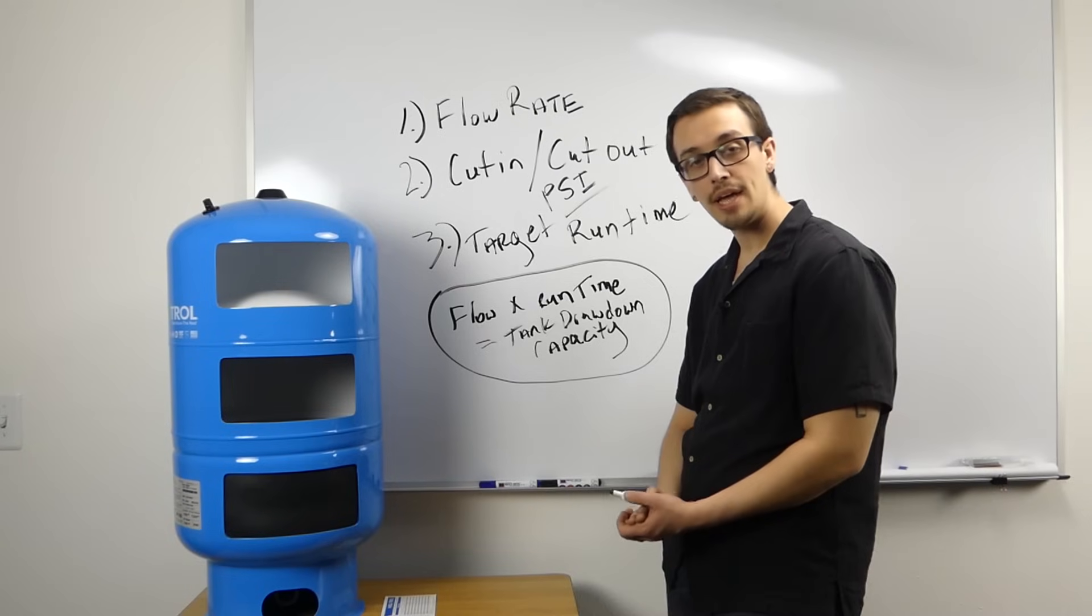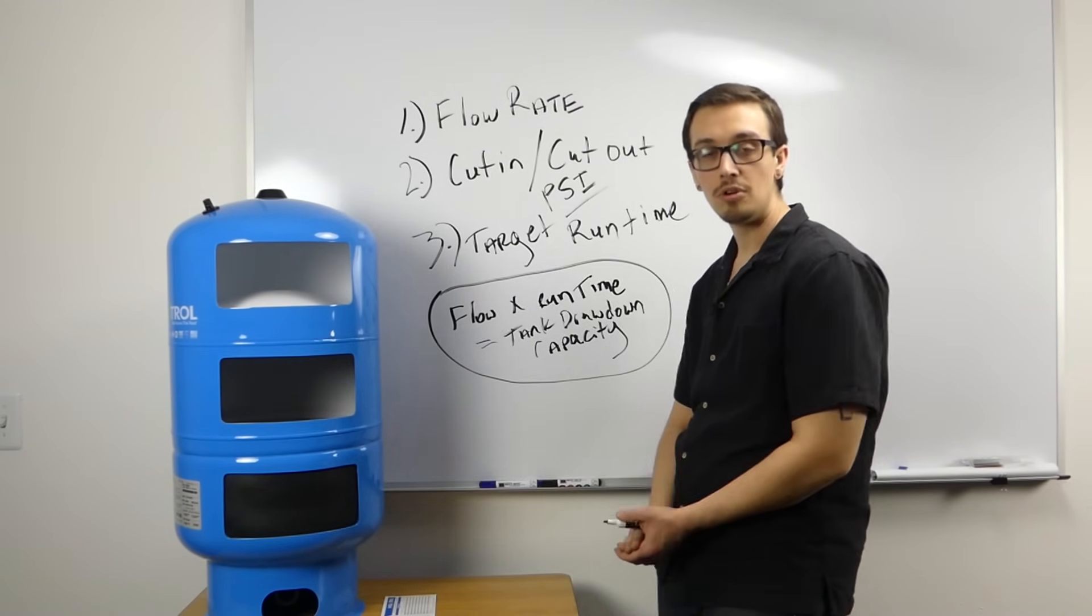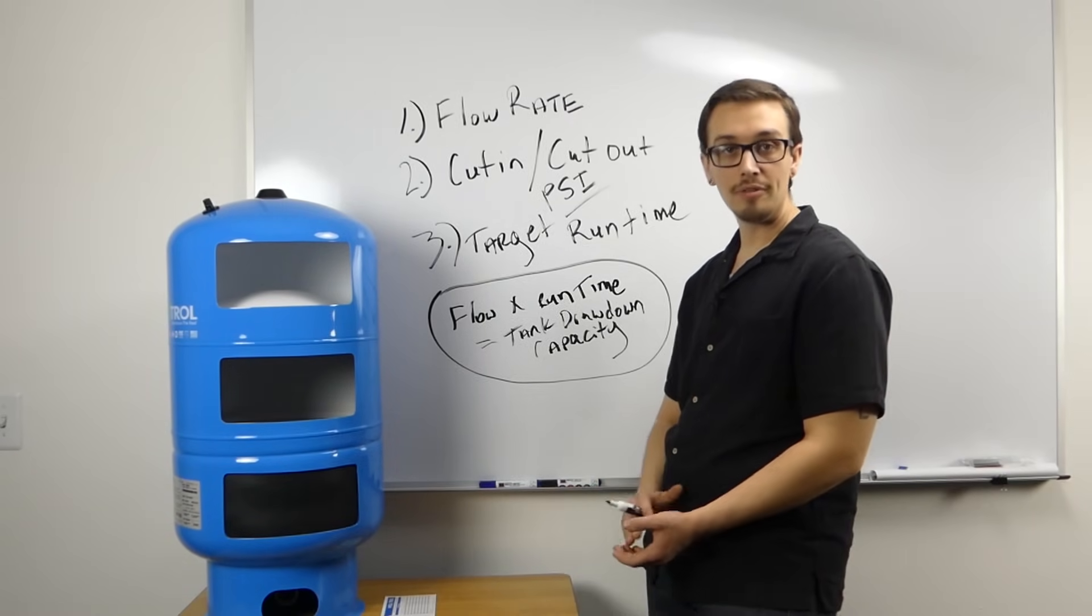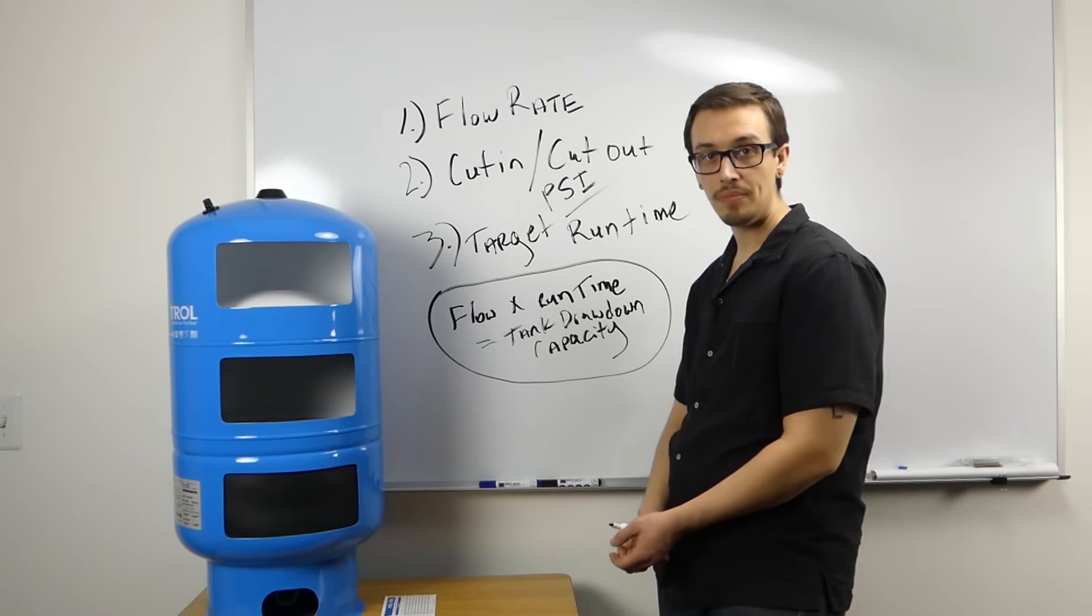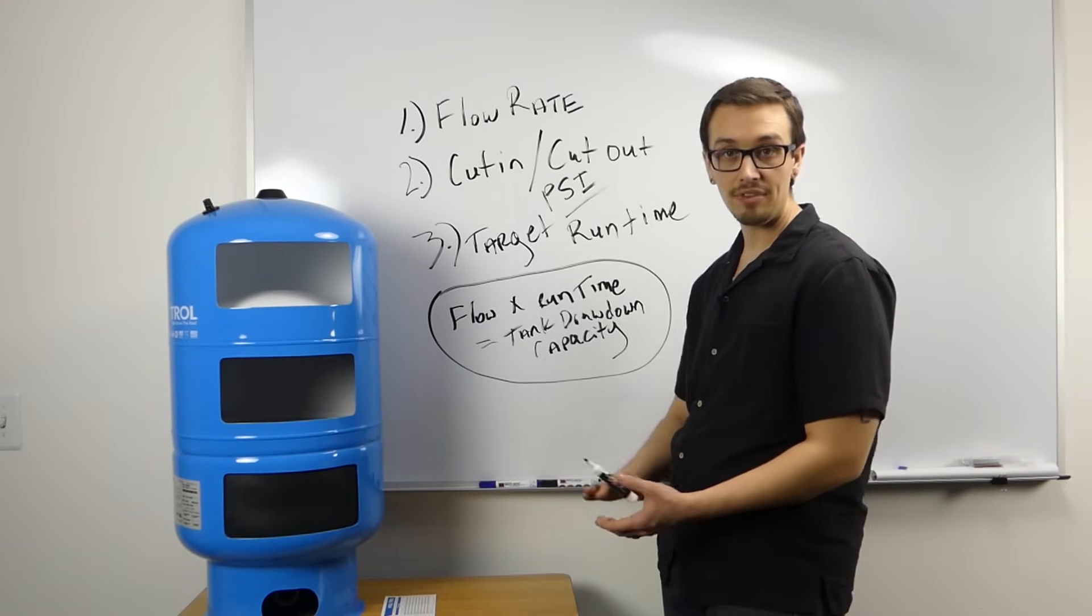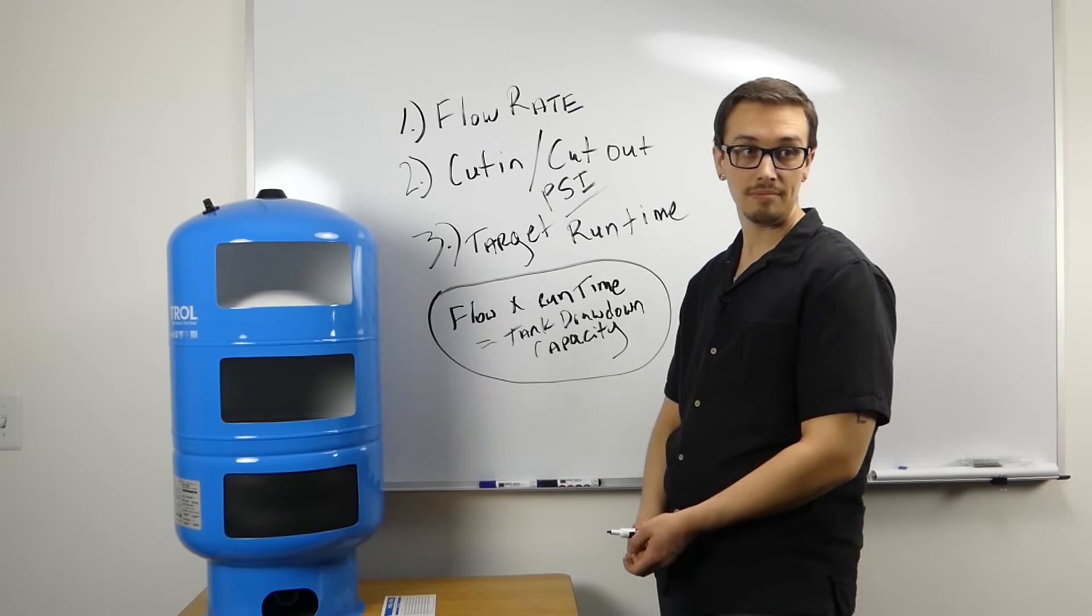Once you go beyond 20 gallons per minute, the rule of thumb is to double it. So for every gallon per minute of the pump, it would be two gallons of drawdown capacity. So a 25 gallon per minute pump would need 50 gallons of drawdown capacity.